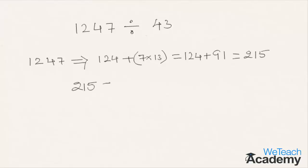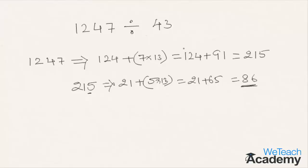Now repeating the concept again with 215: we get 21 plus 5 times 13, which equals 21 plus 65, giving us 86. Since 86 is divisible by 43 (that is, 43 times 2), the original number 1247 is also divisible by 43.